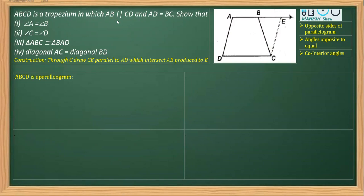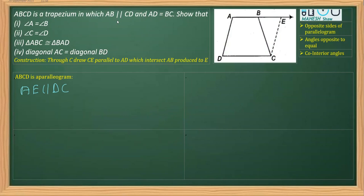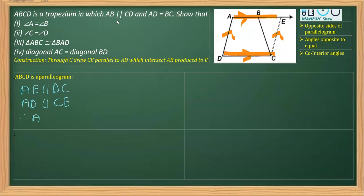After the construction, we are going to prove that figure ADCE is a parallelogram. We can write that AE is parallel to DC, since we already know AB is parallel to DC and parts of parallel lines are parallel. Further, from the construction, AD is parallel to CE. Since two pairs of opposite sides are parallel, therefore ADCE is a parallelogram.